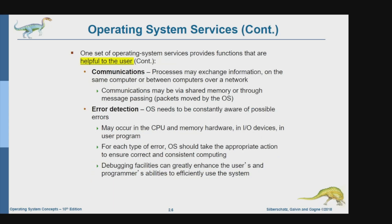Next is communication. Processes may exchange information on the same computer or between computers over the network. One example of communication is remote login from one PC to another PC. Communication can be defined as the process of exchanging information between one device and another device in terms of the computer network.